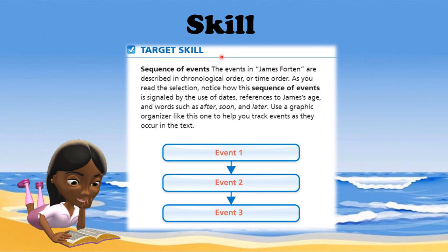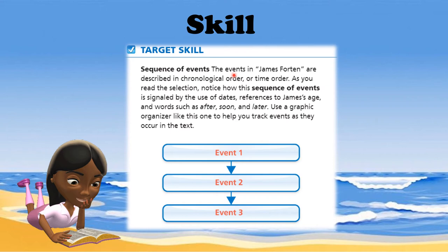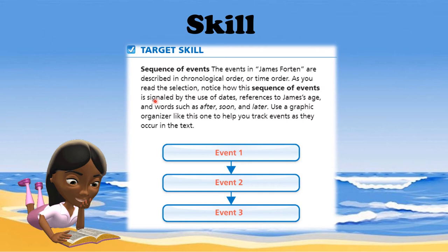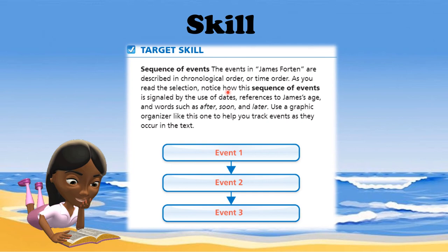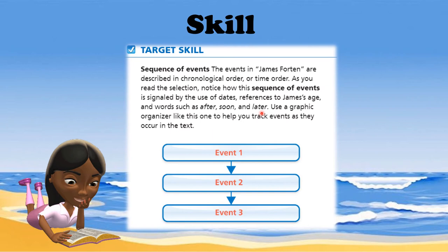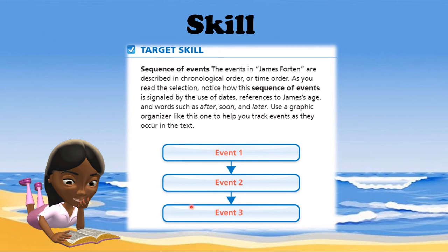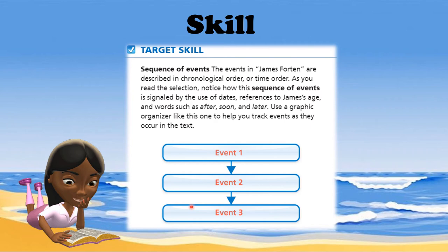Let's proceed to our target skill. For Lesson 14, we're going to study sequence of events, one of the easiest reading skills. The events in James Fortin are described in chronological order, meaning time order. As you read the selection, notice how the sequence of events is signaled by dates, references to James's age, and transitional words like after, soon, and later. Use a graphic organizer like a flowchart to help organize the different events in his life. Be careful, as the biography jumps from event to event, so look carefully at dates and implicitly stated order of events.